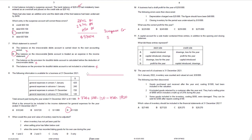Another approach is to prepare the general expense account directly. The opening accrual of $420 appears as balance brought down on the credit side, and the opening advance general expenses appear as balance brought down on the debit side. Payments of $11,500 go on the debit side, closing arrears on the debit side, and closing advances on the credit side. The balancing figure gives the income statement value.